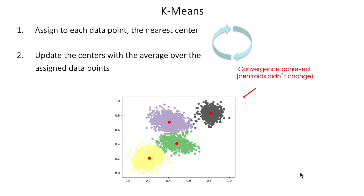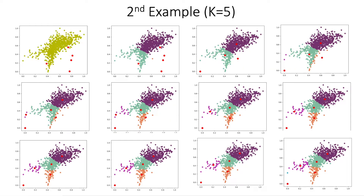Visually, we can see the algorithm converges to something that makes sense for this toy dataset where the groups are clear. In a second, more realistic example, we have an initial database of yellow points and start by randomly generating five centroids — k equals 5. Initially they are in random positions. After assigning groups, there are mostly two groups, and a third group with just one point. After updating the centers, the orange point becomes its own center since it's a group of one. Two other centers converge to the same point, so we see only four distinct centers even though there are five.